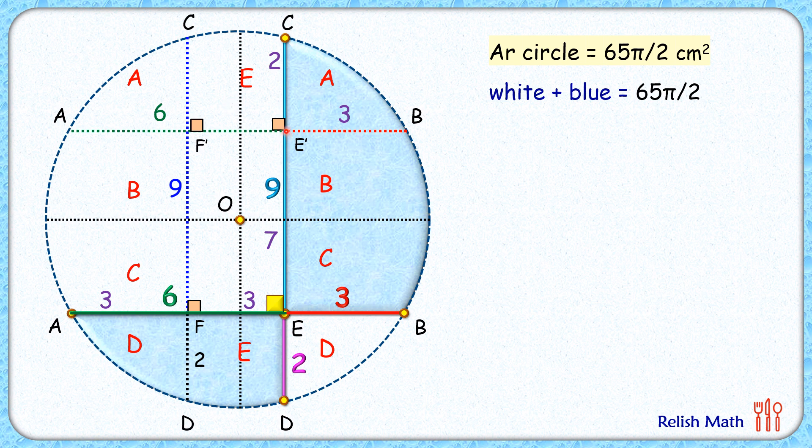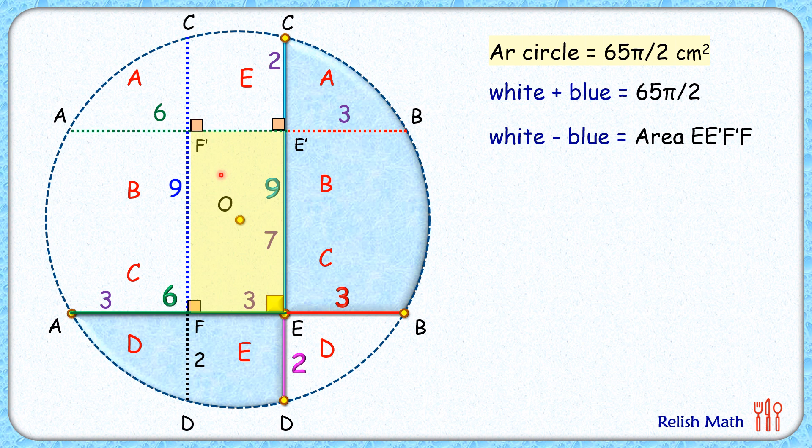What we are left with is this central region, that's a rectangle here. So we can say here that the white region is more than the blue region by the area of this rectangle. So we can say white region minus blue region is nothing but the area of this rectangle, and the area of this rectangle is 7 × 3 or 21 cm².